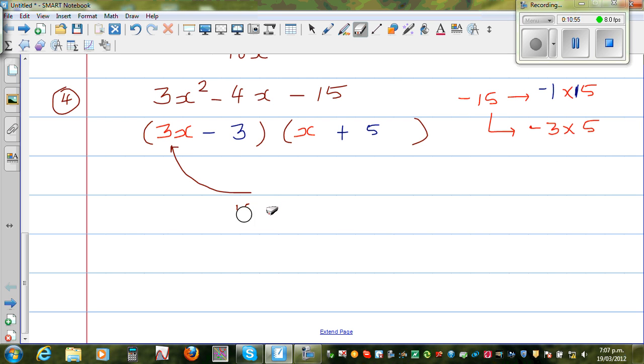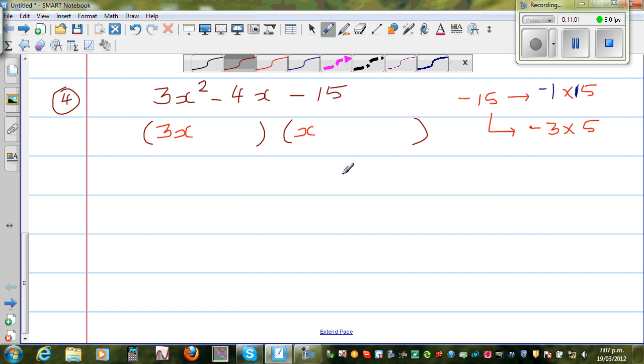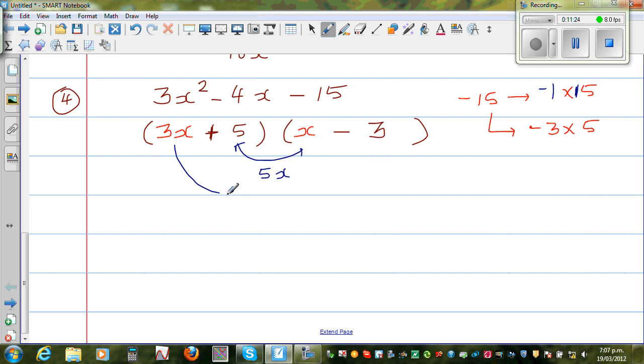So I need to think what other way can you write this. Let me put minus 5 and plus 3. What will happen now? Look at this: this is plus 5x, and 3x times negative 3 is negative 9x. Does it work? Minus 9x plus 5x is equal to minus 4x. So that's it.